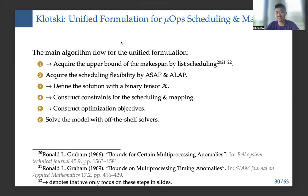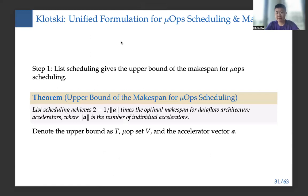For the unified formulation for μOP scheduling and mapping, our algorithm flow has six steps: first, acquire the upper bound of the makespan by list scheduling; second, acquire the scheduling flexibility by ASAP and ALAP scheduling; third, define the solution with a binary tensor; fourth, construct constraints for scheduling and mapping; fifth, construct optimization objectives; and sixth, solve the model with off-the-shelf solvers. The list scheduling achieves a 2 minus 1 over A times the optimum makespan, where A is the number of individual accelerators. The binary tensor X has size |V| × T × T × |A|.